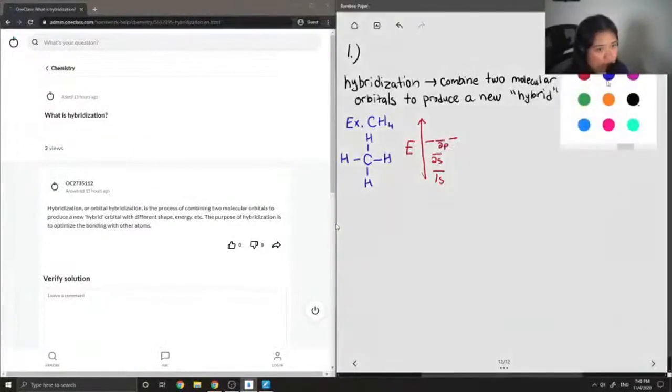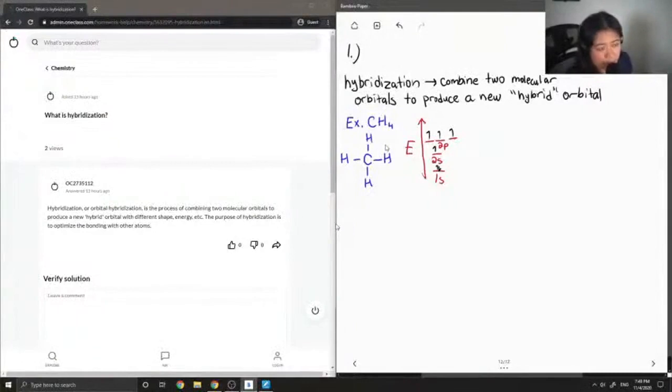You would have your electrons there and then for the four hydrogens they would all be at different energy levels. But we know that this isn't true because all of the hydrogens should be equivalent in energy since they are all the same. So this is when hybridization comes in.